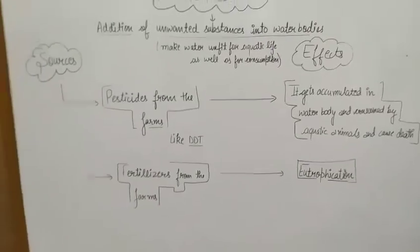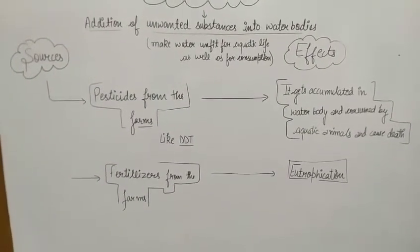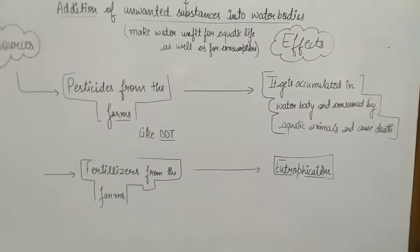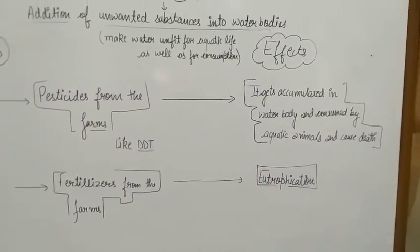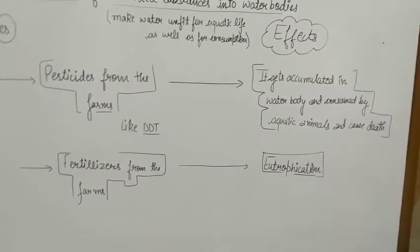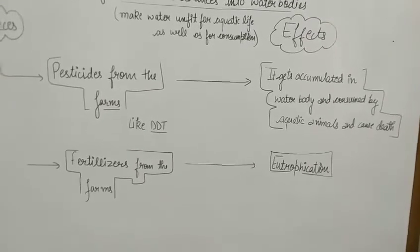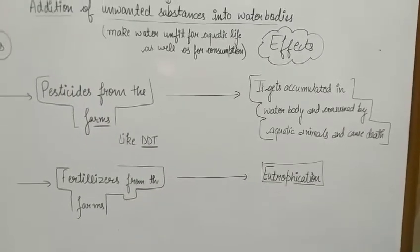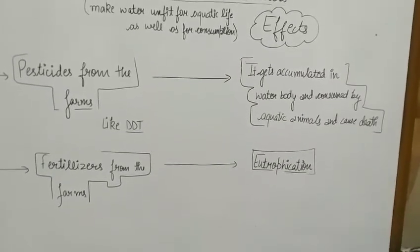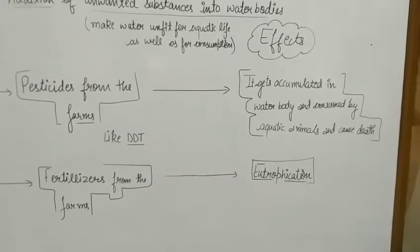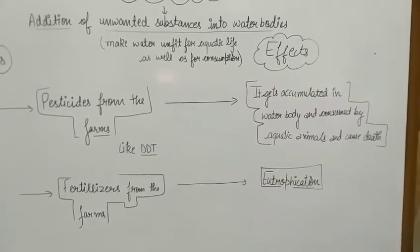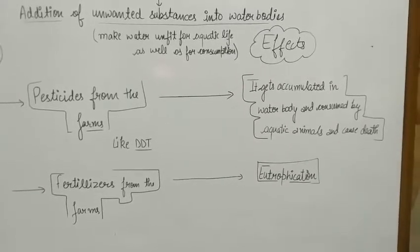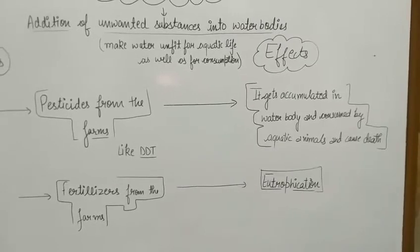Another source is pesticides from agricultural farms. Farmers spray chemicals to control pests, and these pesticides flow into rivers, ponds, or other water sources and mix into them. A common example is DDT. As pesticides flow into water bodies, the amount of DDT slowly accumulates in that water body, and aquatic animals start to consume it. When they consume these harmful pest-killing chemicals, it definitely harms them and causes their death.